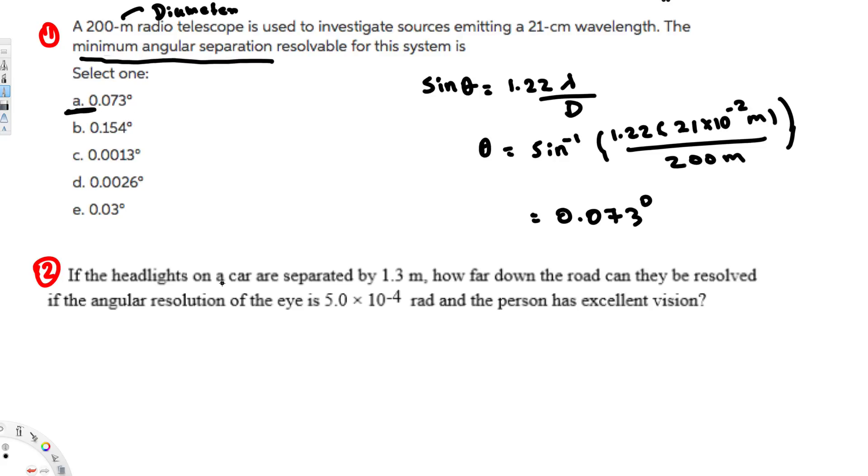Now let's look at the second question. If the headlights on a car are separated by 1.3 meters, so separation of the headlights is 1.3 meters, that is small d. How far down the road can they be resolved if angular resolution of the eye is 5 times 10 to the power of minus 4 radians and the person has excellent vision?